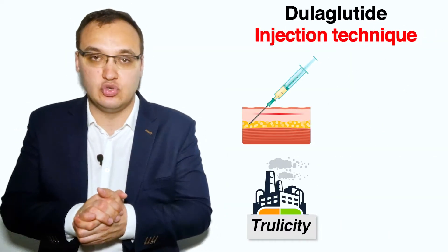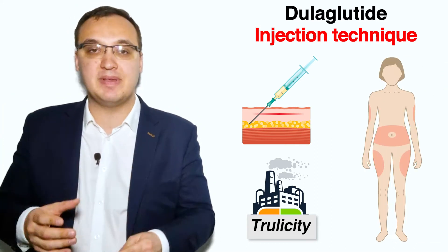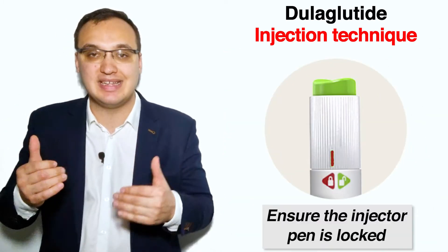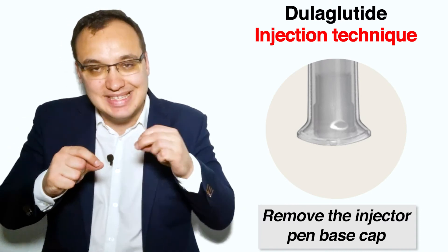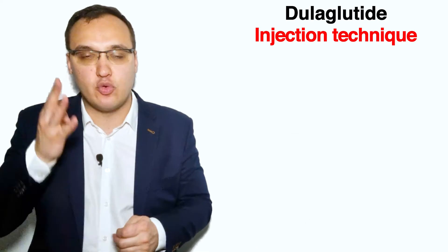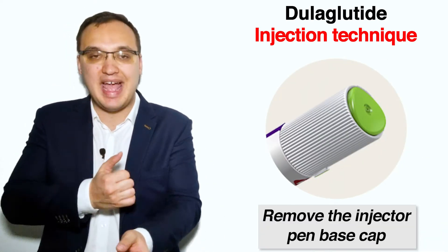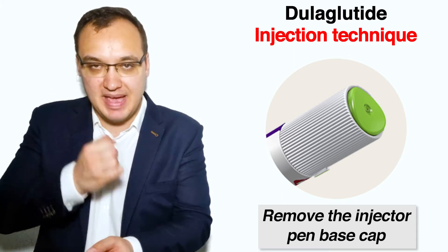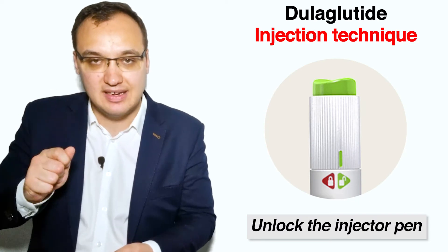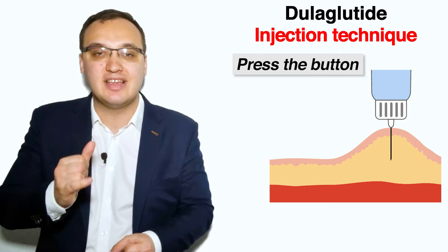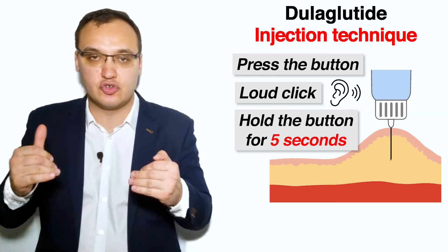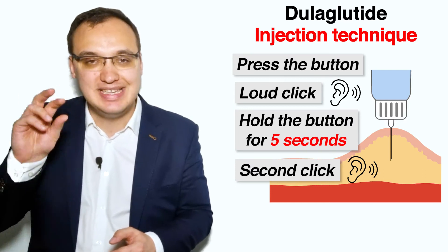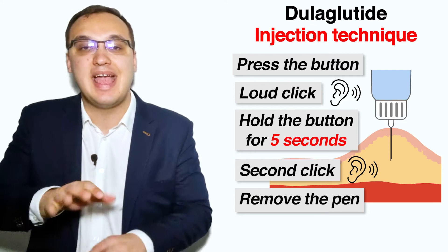Now let's see how to inject yourself with dulaglutide, which has the trade name Trulicity. The first step is to select an injection site — whether the upper arm, thigh, or abdomen — and disinfect the skin. The second step ensures that the injector pen is locked, with the indicator pointing towards the locked symbol. The third step is to remove the injector base cap — don't try to cover it again, otherwise it will damage the needle. The fourth step is to place the flat base of the injector pen firmly on your skin at the chosen injection site. Remember, the needle is hidden in the base. Unlock it by turning the lock on the opposite end. The fifth step is to press and hold the injector pen making a subcutaneous injection. There should be a loud click when you inject. Keep the button pressed for about five seconds. After hearing the second click — which means the needle is retracting — remove the injector pen from your skin and safely dispose of it.